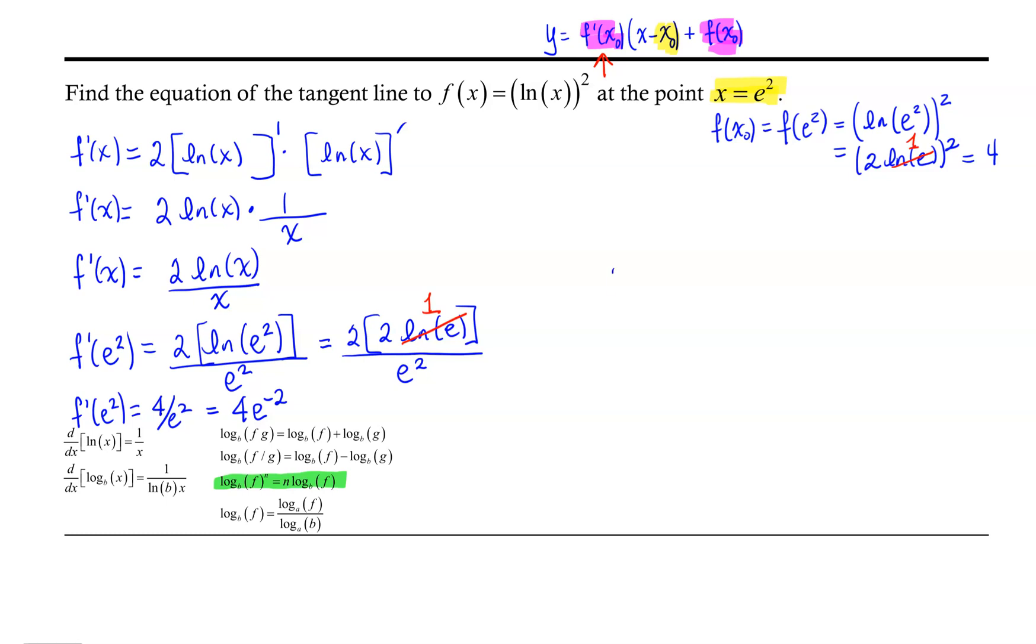Now we're ready to write the equation of our tangent line. Our tangent line will be y = (4/e²)·(x - e²) + f(e²), which is 4.